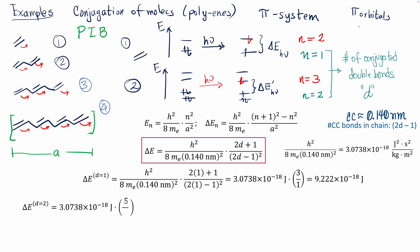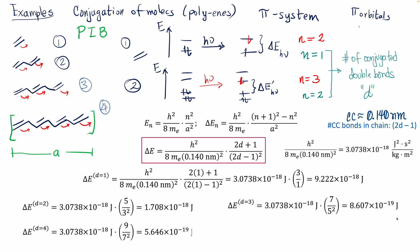We can do the same calculation for two double bonds: two times two plus one is five on top, and two times two minus one is three squared on the bottom. That gives about 1.7 × 10⁻¹⁸ joules. For three double bonds, substituting gives the constant times seven over 25. For four double bonds: two times four plus one is nine on top, and two times four minus one is seven squared on the bottom, giving an even lower energy. Five double bonds gives even lower energy still. You can see the trend: as the number of double bonds increases, the transition energy decreases.